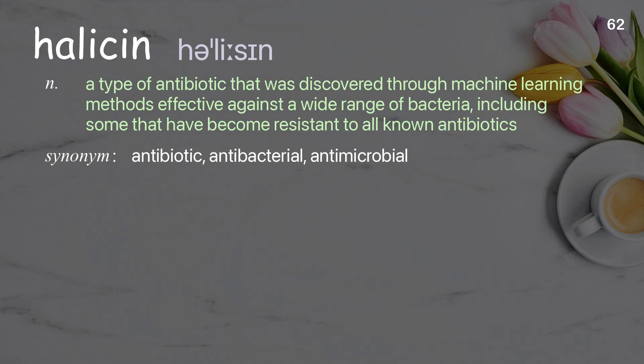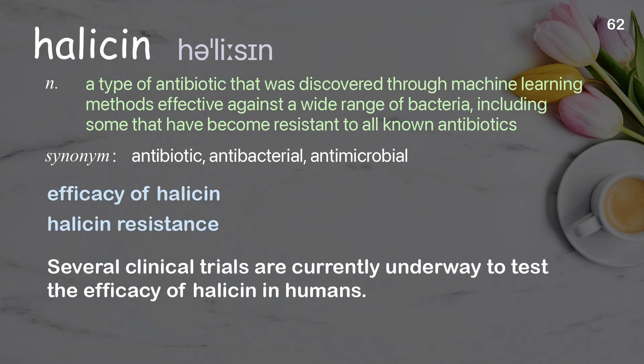Halicin: a type of antibiotic that was discovered through machine learning methods, effective against a wide range of bacteria, including some that have become resistant to all known antibiotics. Examples: efficacy of halicin, halicin resistance. Several clinical trials are currently underway to test the efficacy of halicin in humans.